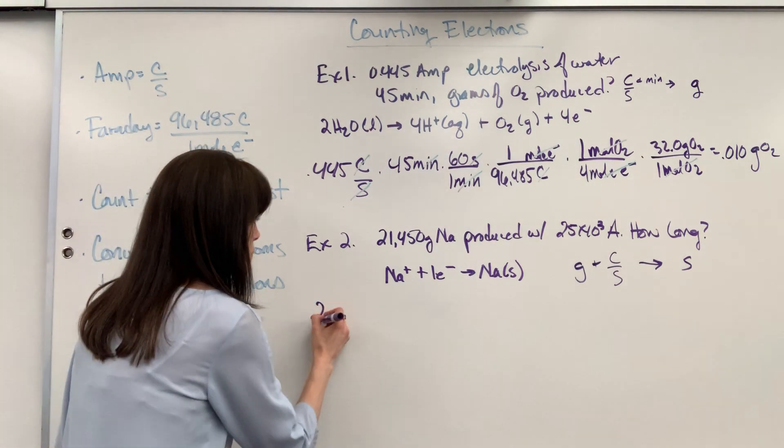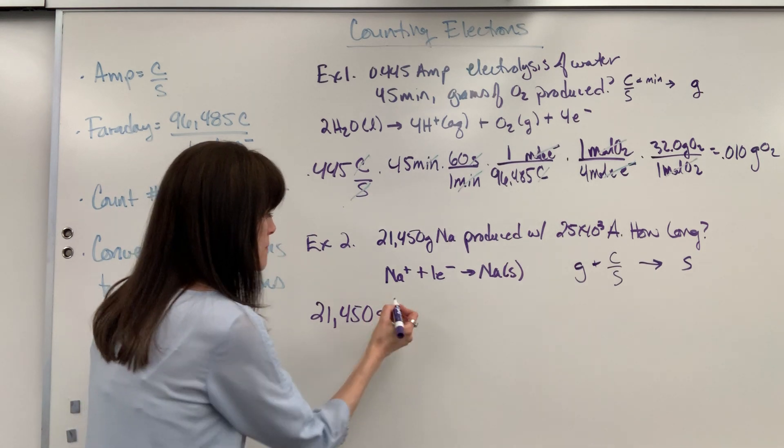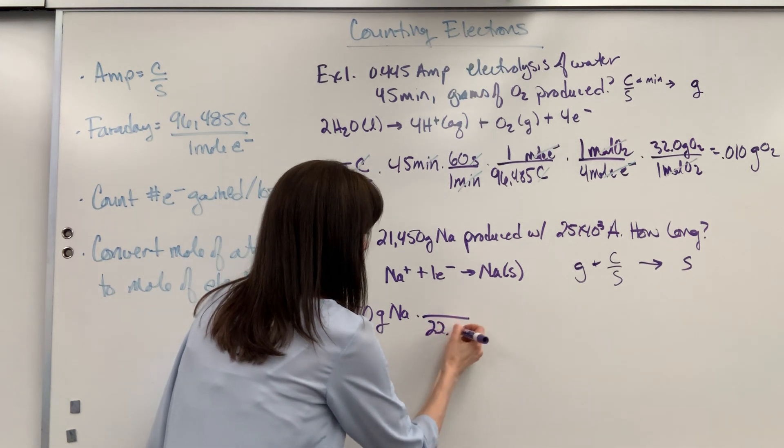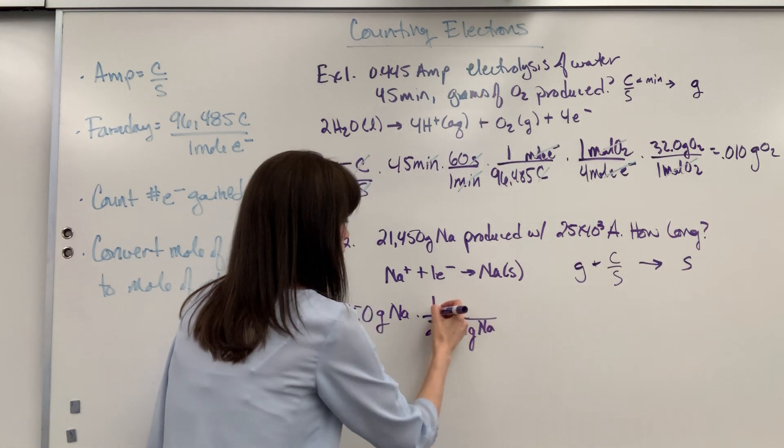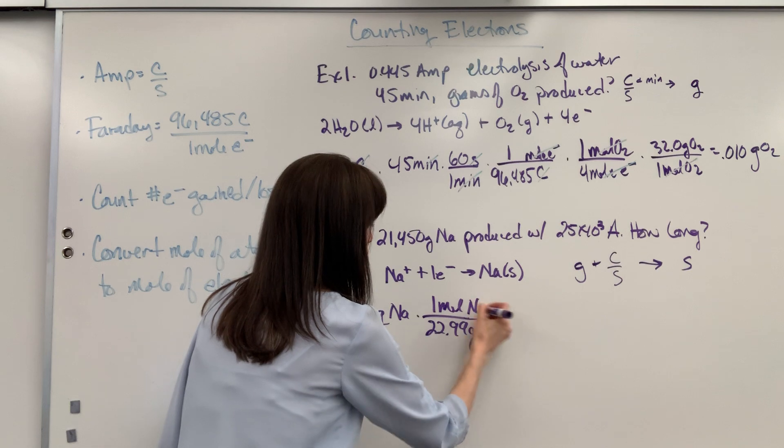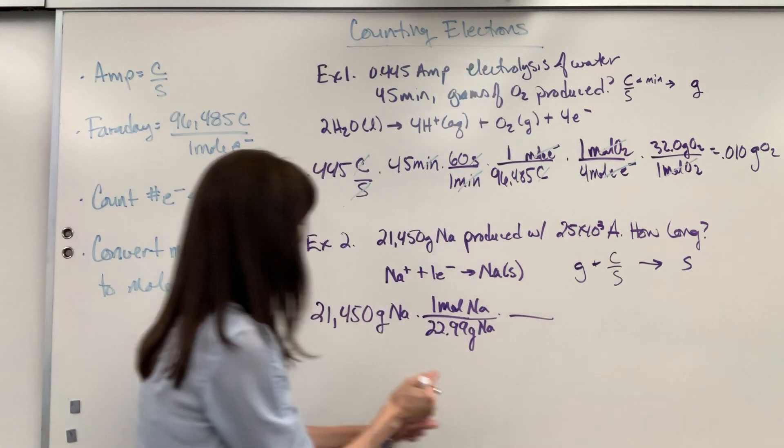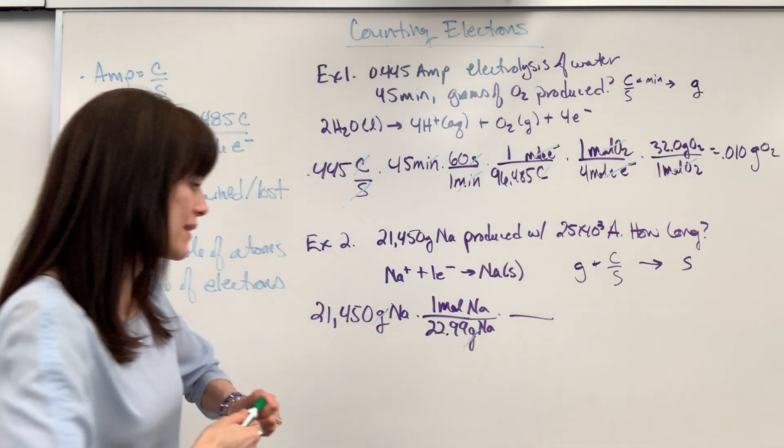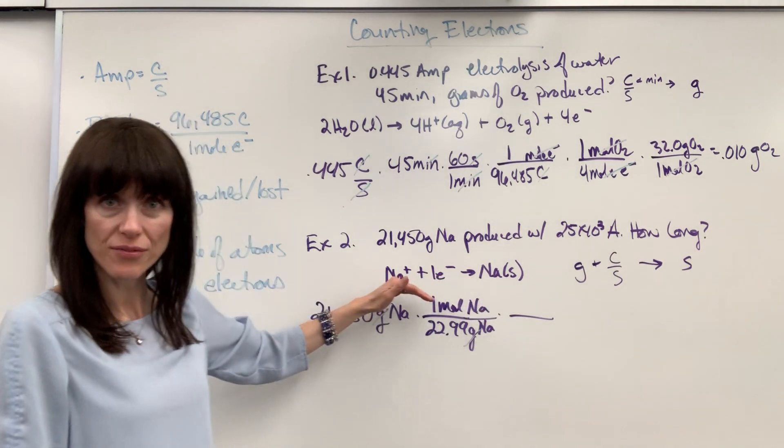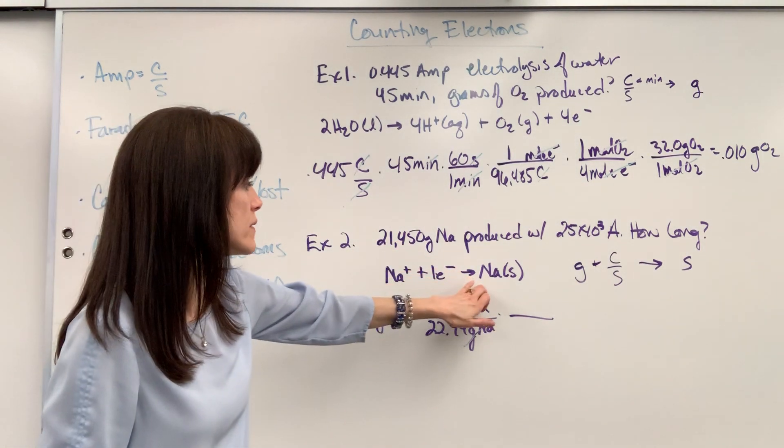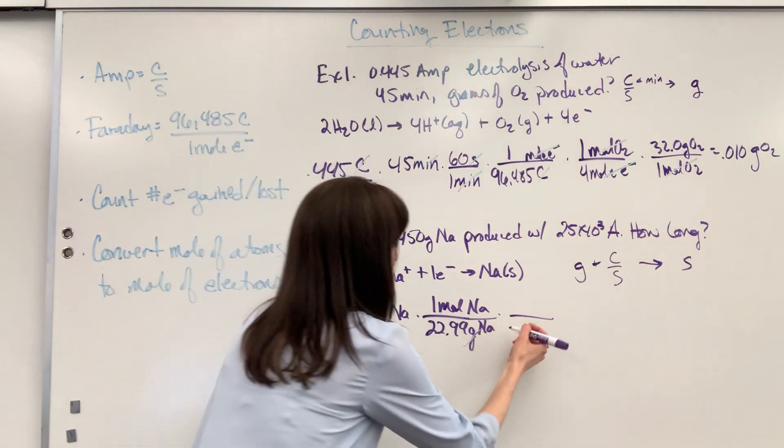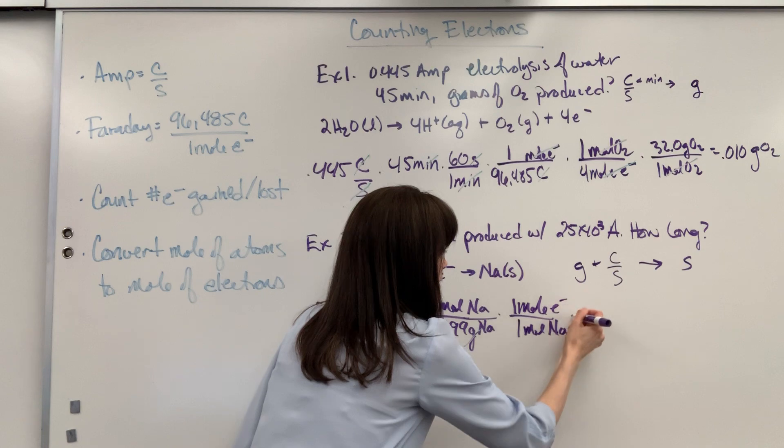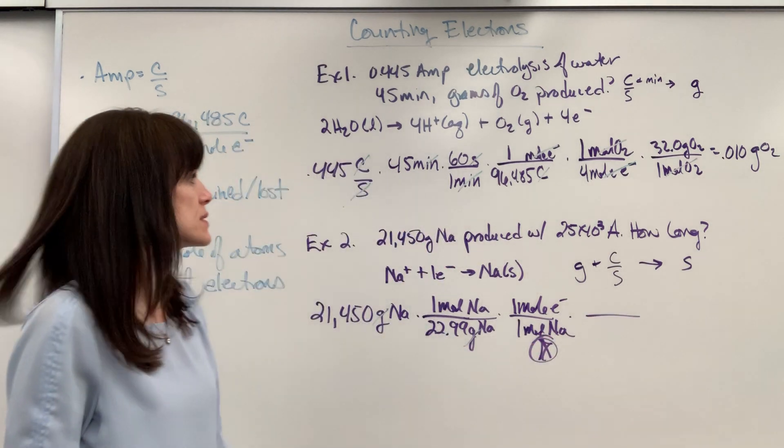We're going to have the 21,450 grams. That's your sodium. Let's convert it to moles. So, we've got 22.99 grams, just looking at the periodic table, one mole of sodium. Okay, so let's see what cancels so far. We got rid of grams. I have moles of sodium. Now, to bring this to electrons, we've got to use this little half reaction. One mole of sodium came from one mole of electrons. So, one mole of sodium was produced by one mole of electrons. That is the crucial step.